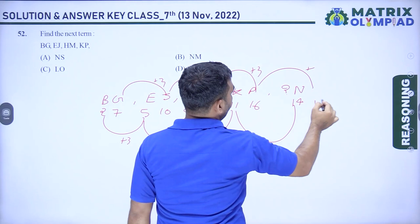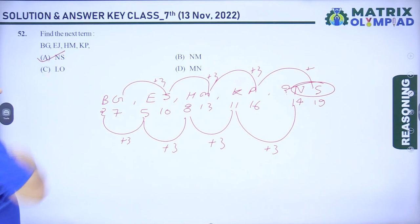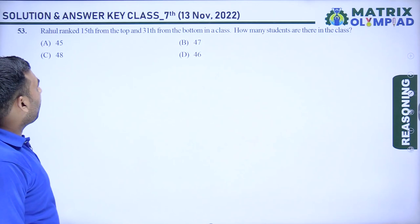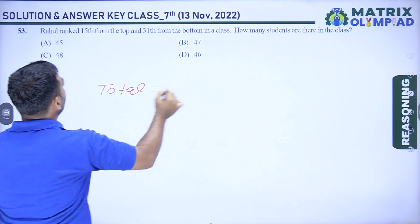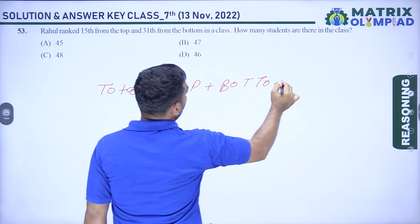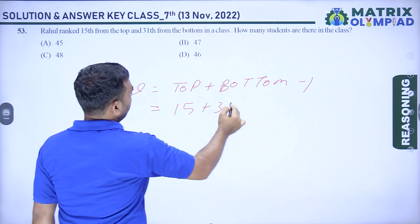Question 3: Rahul ranked 15th from the top and 34th from the bottom in a class. Total students = top + bottom − 1 = 15 + 34 − 1 = 48. Wait — recalculating: 15 + 31 − 1 = 45. Answer is 48. Option A is correct with 48 students.